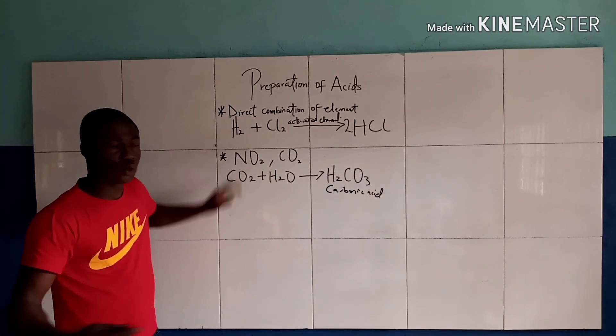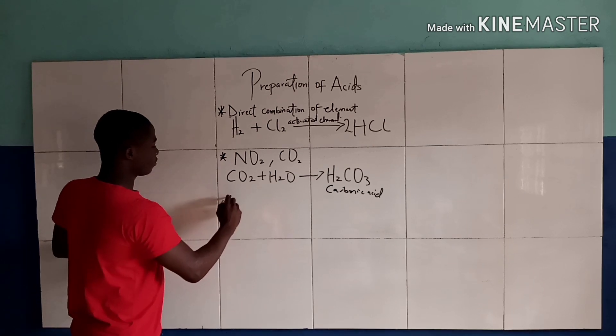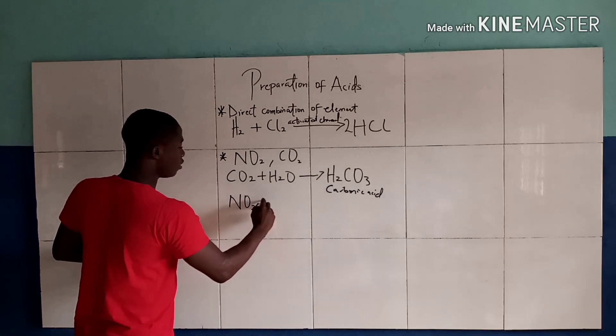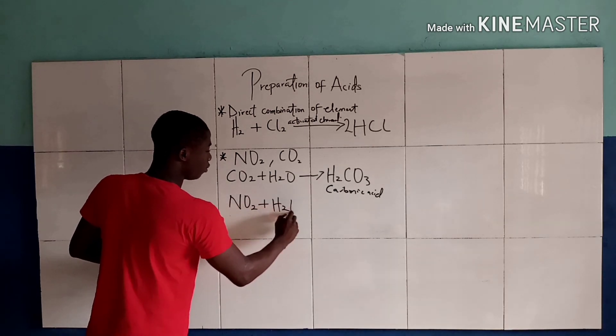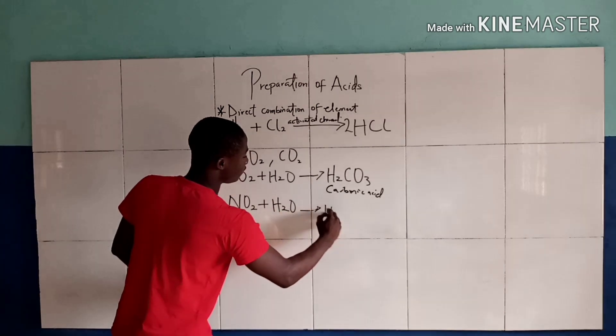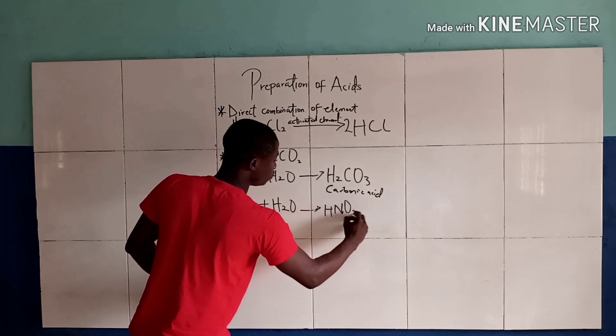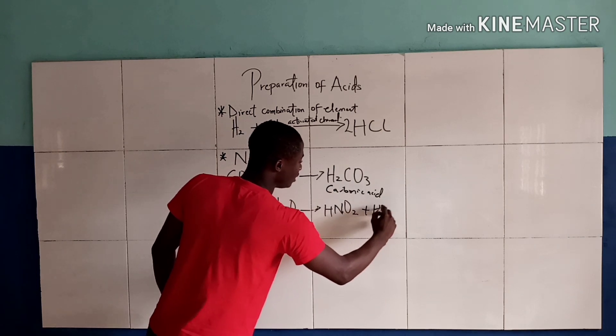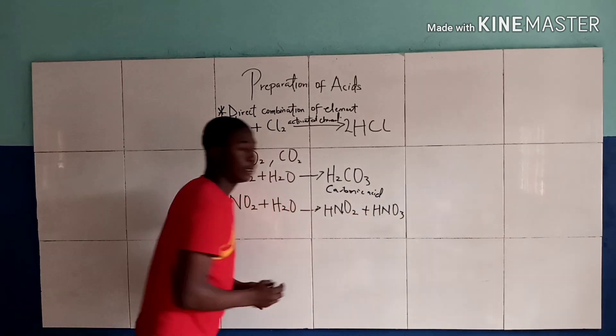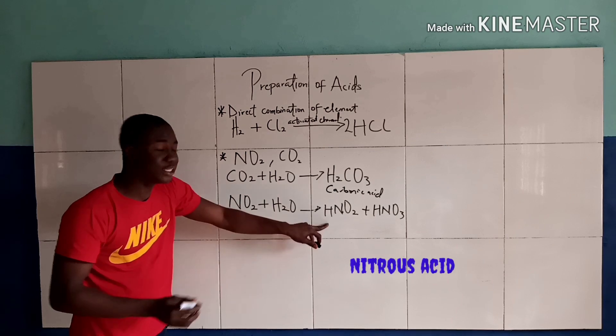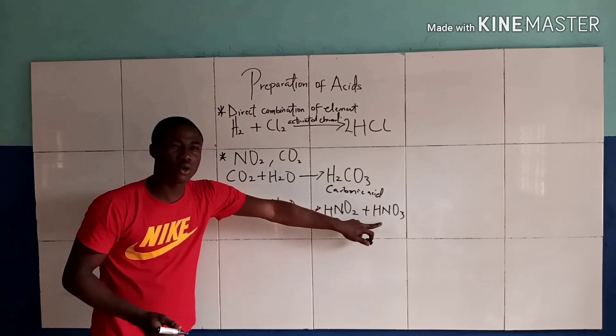Dissolving NO2 in water, we get two acids. The first acid is HNO2 and the other is HNO3. This is called nitrous acid while this is called nitric acid or aqua fortis.